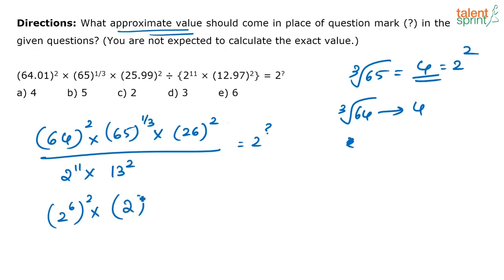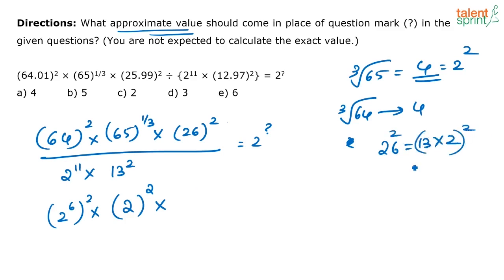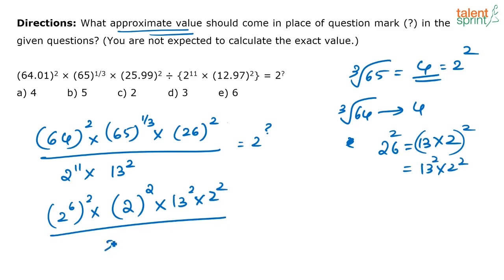What is 4? 4 is nothing but 2 squared, so 65 to the power 1 by 3 is approximately equal to 2 squared. Now you have 26 squared — what is 26? 26 is 13 into 2, so 26 squared is 13 squared into 2 squared. This gives 13 squared into 2 squared divided by 2 to the power 11 into 13 squared. The 13 squared terms cancel out.